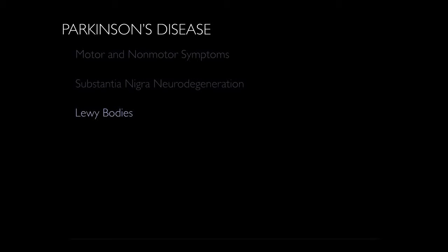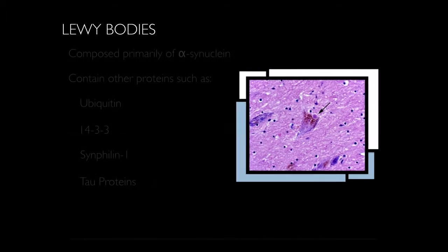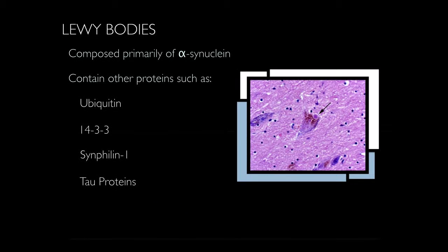Lewy body formation, another key feature of PD, is believed to play a significant role. These cytoplasmic inclusions are made primarily of alpha-synuclein, but may also contain other proteins such as ubiquitin, 14-3-3, and tau.